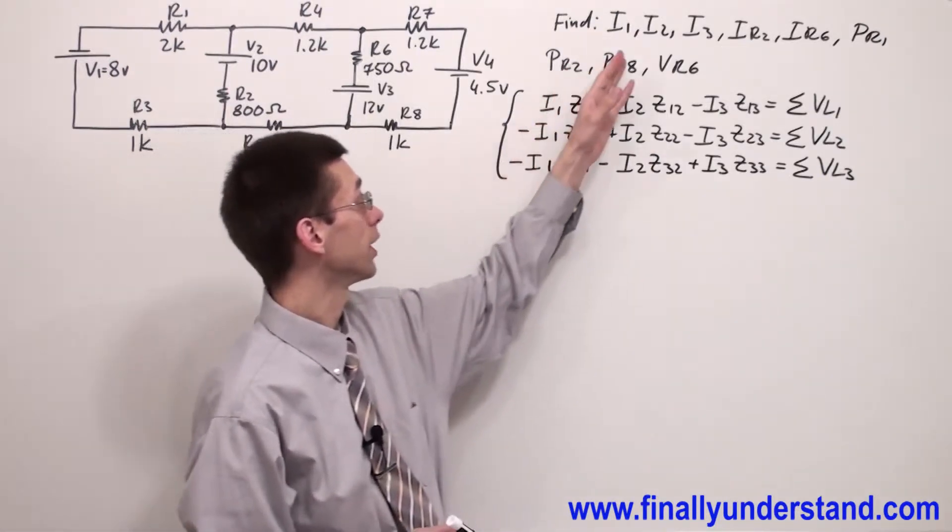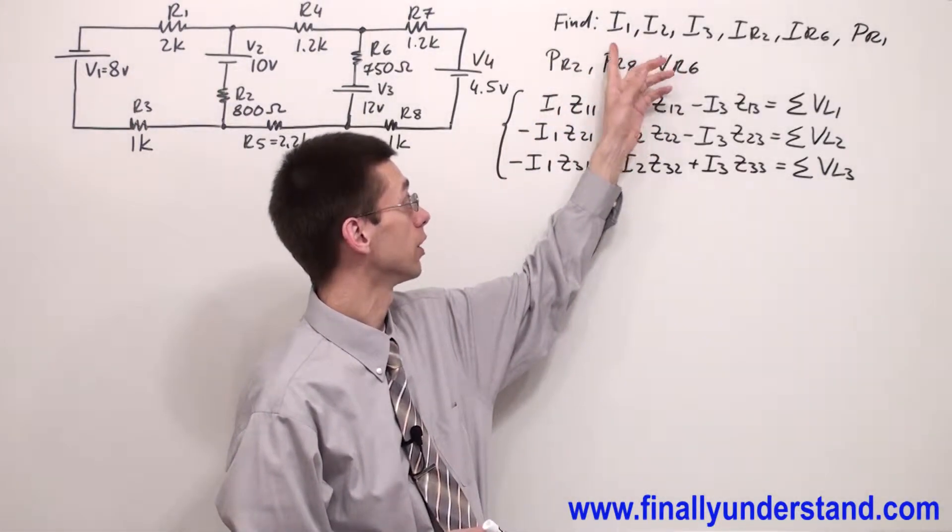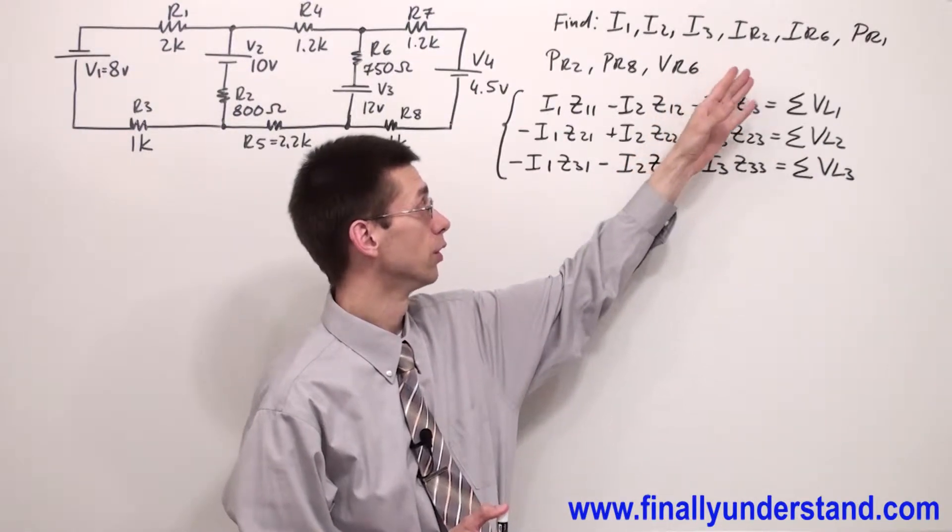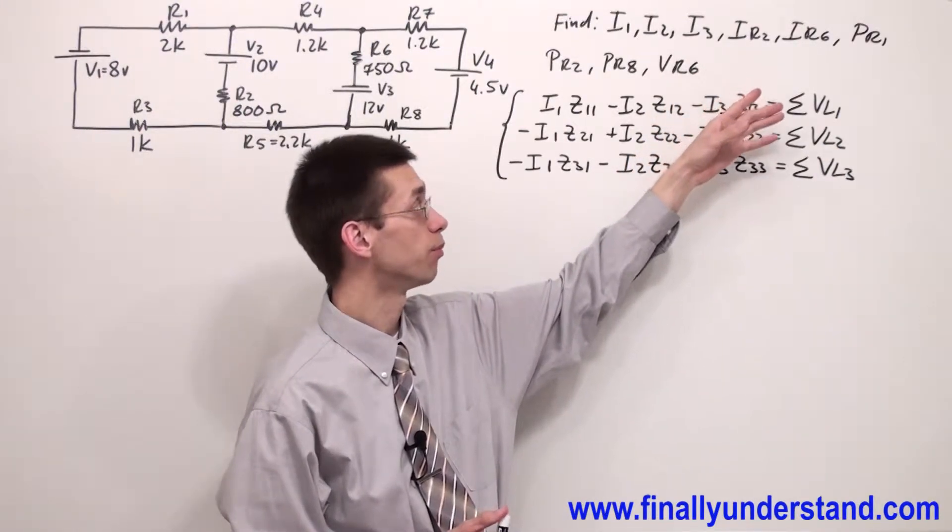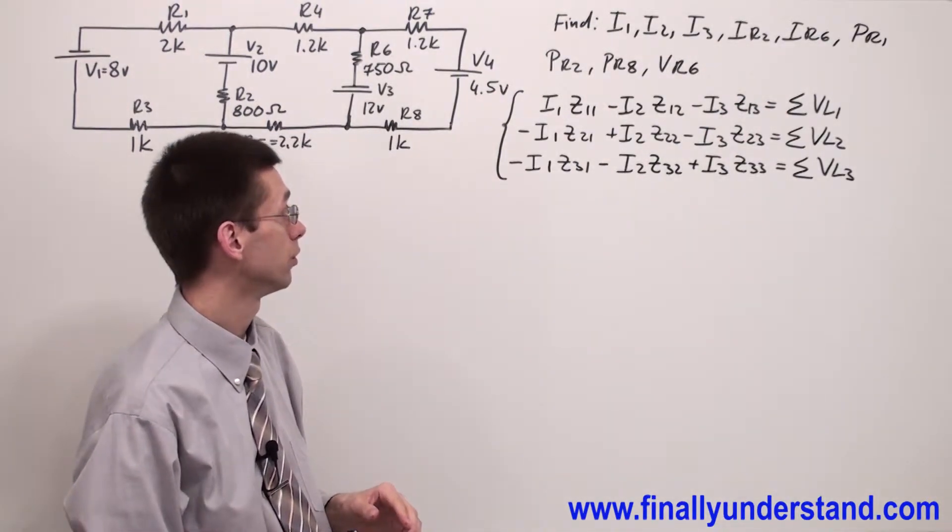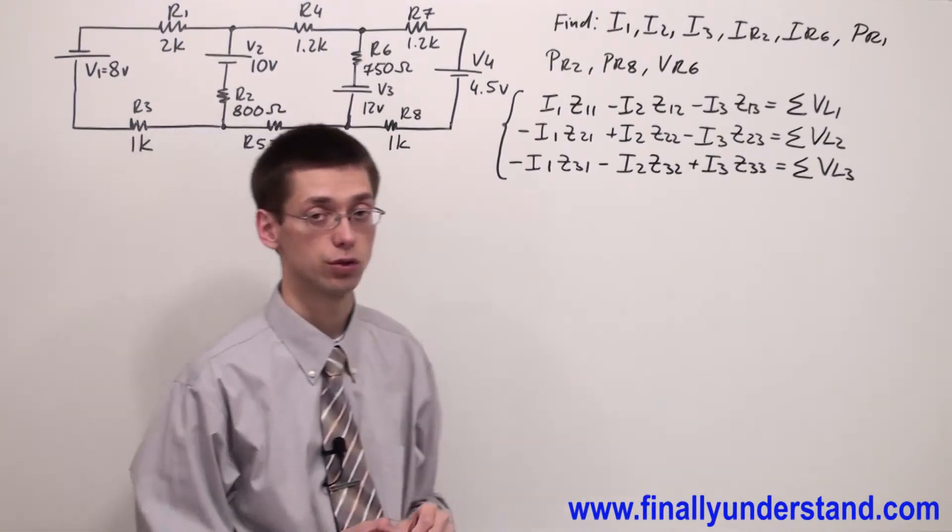We're supposed to find I1, I2, I3, three loop currents. We're supposed to find the current which goes through resistor R2, current through resistor R6, power at resistor R1, power at resistor R2, also power at resistor R8 and voltage across resistor R6.